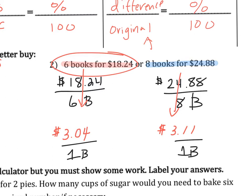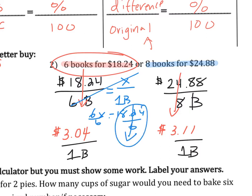You could also set up a proportion: $18.24 for six books — how much for one book? Cross multiply: 6x equals $18.24, divide by 6, and you get the same answer. So if you don't remember how to just divide for unit rate, setting up a proportion also gives you the right answer.